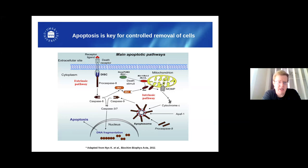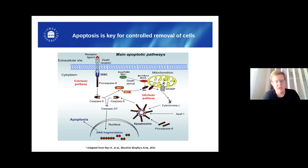I'm going to directly dive into the apoptotic pathways. I'm sure you are quite familiar with this map. It's a quite complicated process, but it has to be complicated because this is the ultimate control and checkpoint for removal of cells. We can differentiate between the extrinsic and the intrinsic pathway. When the cell is doomed to die, the death signal goes outside the membrane to form the DISC complex, followed by activation of effector proteins such as pro-caspase-8 being converted into caspase-8, and BID being converted into tBID.